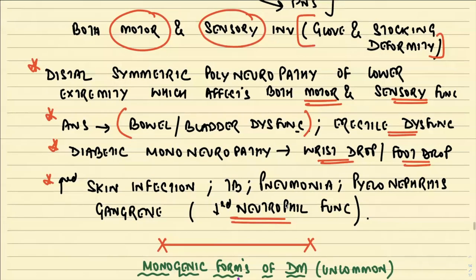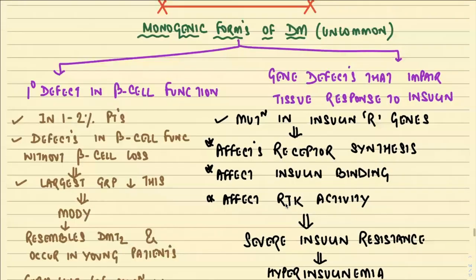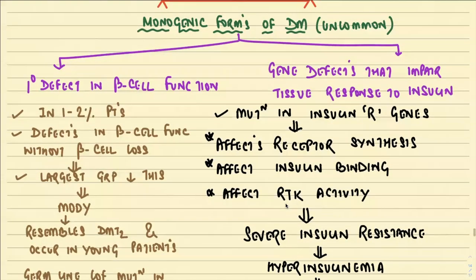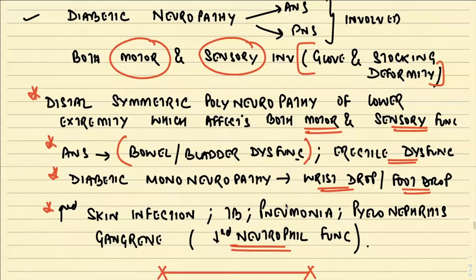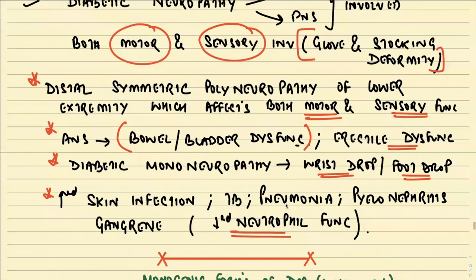We have completed the common types of diabetes mellitus. Now we will look at monogenic forms of diabetes. Unlike type 1 and type 2, which have multiple genetic and environmental causes, monogenic diabetes involves a single gene. It is an uncommon form and can occur due to either a primary defect in beta cell function or gene defects that impair tissue response to insulin.